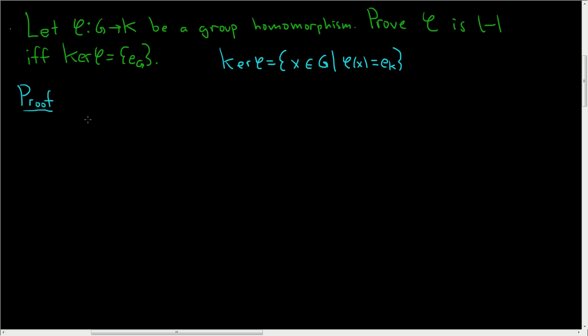So to start the proof, let's assume φ is 1-to-1. Suppose φ is 1-to-1, and the claim is that the kernel of φ is equal to this set here.